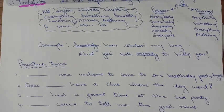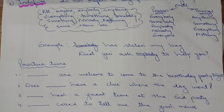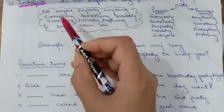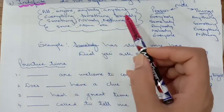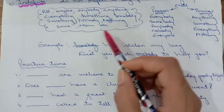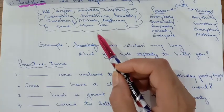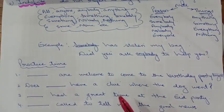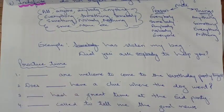Indefinite pronoun — the term 'indefinite' itself tells you: when you are not sure, you use it. Indefinite pronouns do not refer to any particular thing or any particular person. All, anyone, anybody, anything, everything, something, somebody, nobody, nothing, some, none — these are all your indefinite pronouns. When you are not sure about the person or thing, you use an indefinite pronoun.